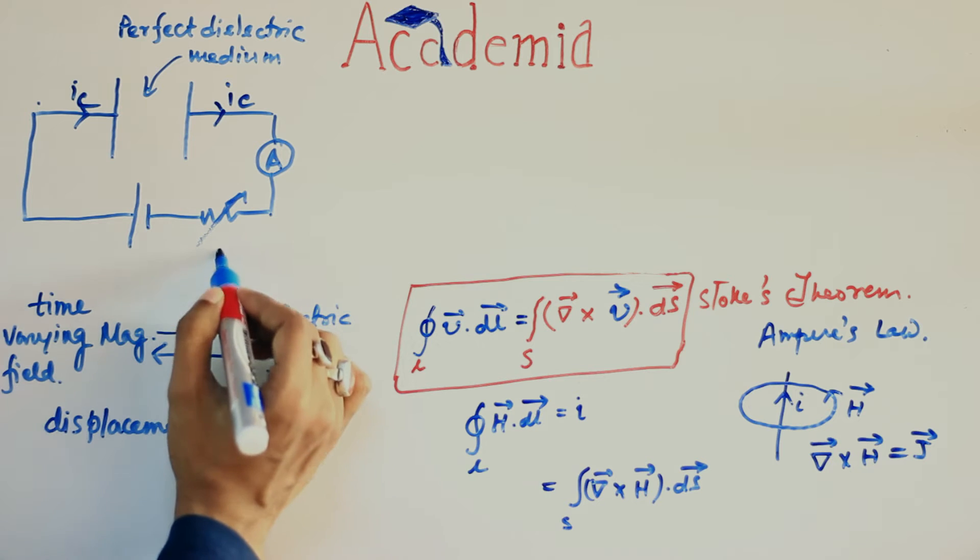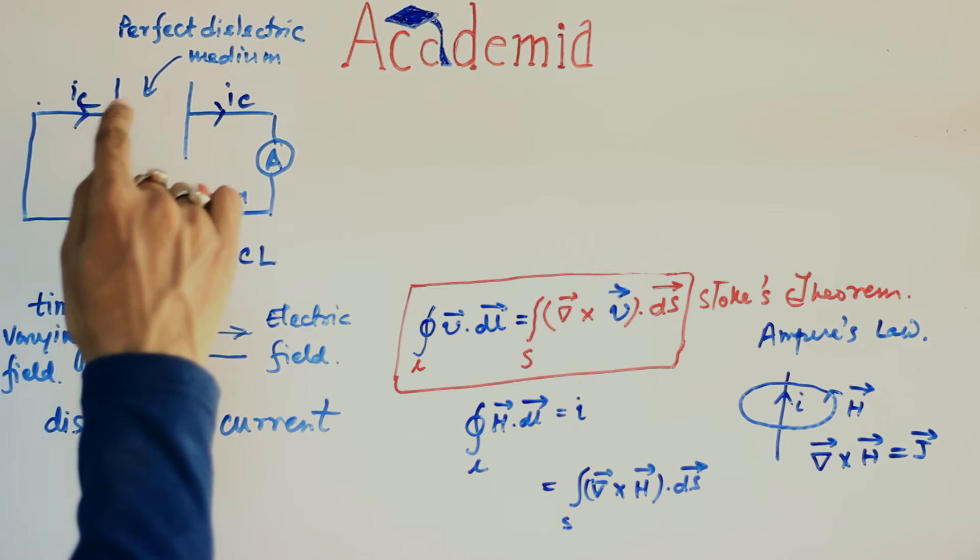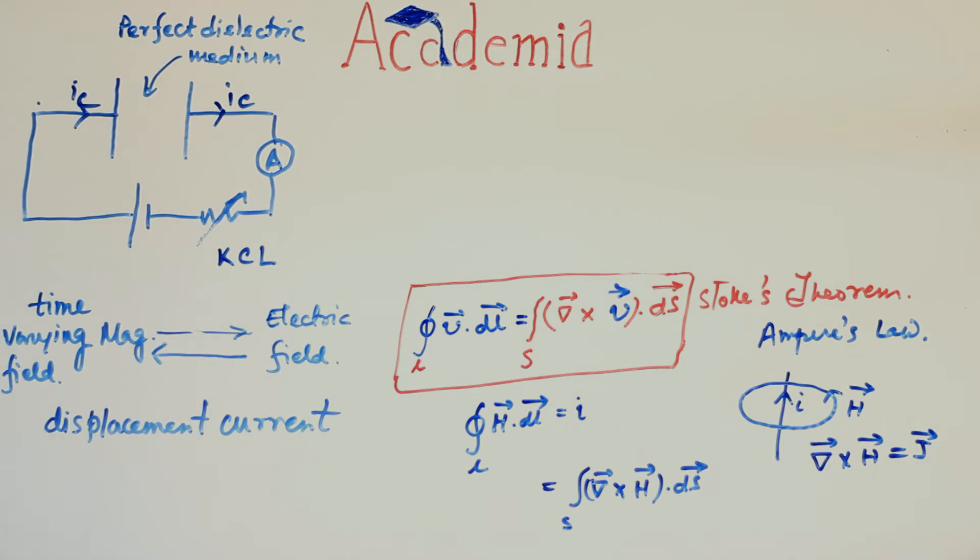This phenomenon directly contradicts KCL, Kirchhoff's current law which says current entering a junction must be equal to the current leaving the junction. Now to preserve this principle of continuity of current that is KCL,